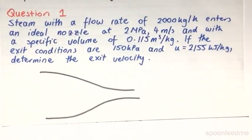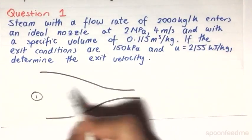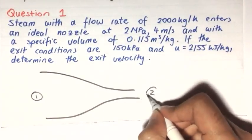So drawing a diagram, it will be similar in shape to this, with the entrance of the nozzle here at state 1 and the exit of the nozzle here at state 2.